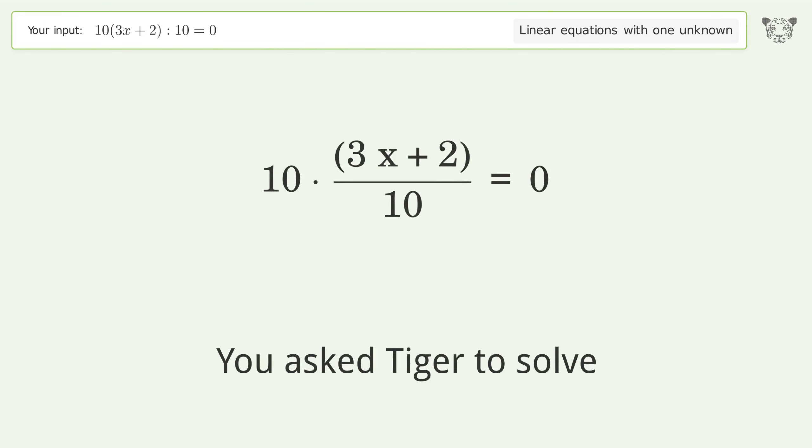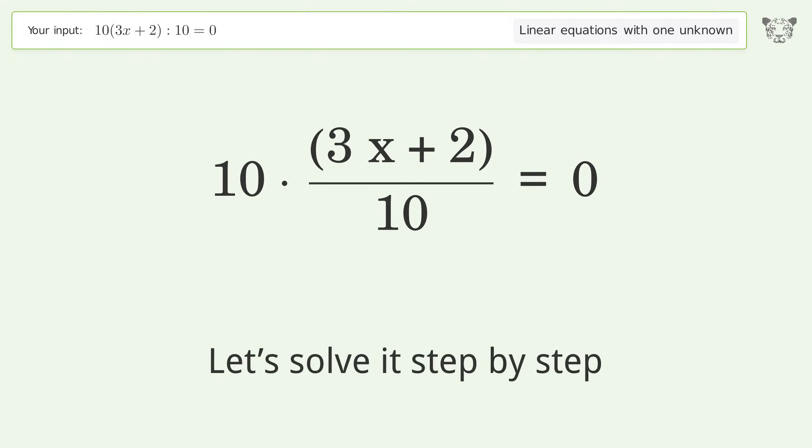You asked Tiger to solve this problem dealing with linear equations with one unknown. The final result is x equals negative 2 over 3. Let's solve it step by step.